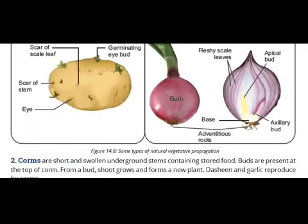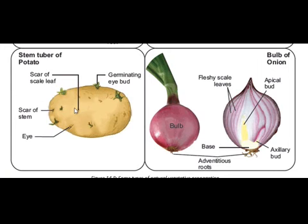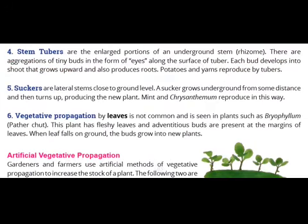Potatoes and yams reproduce by tubers. In potatoes, the buds or eyes are cut and planted, and from these new leaves and new plants are generated. The potatoes are thus involved in the reproduction of a new plant. The next method is suckers. Suckers are lateral stems close to ground level.